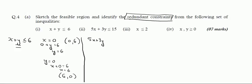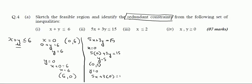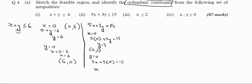For the second line, 5x plus 3y equals 15: when x is 0, we get 3y equals 15, so y equals 5 — giving point (0, 5). When y is 0, we get 5x equals 15, so x equals 3 — giving point (3, 0). Note that we use x=0 and y=0 because it makes the calculations easier, though any two values would work.